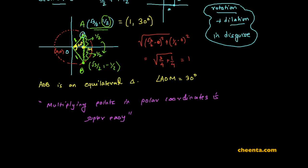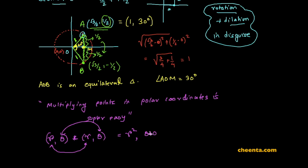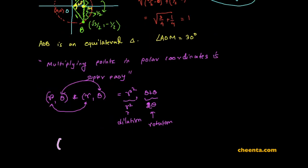If you have a point (R, θ) and you multiply it with itself, the lengths multiply — you get R², and the angles add up, giving 2θ. The length multiplying is the dilation part, and the angles adding is the rotation. So multiplying (1, 30°) by itself 165 times gives (1¹⁶⁵, 165 × 30°) — that is, 1 raised to 165 and 30° added to itself 165 times.